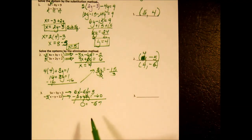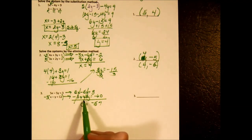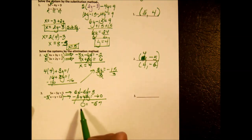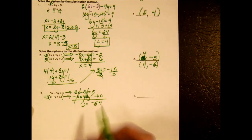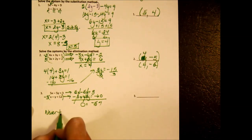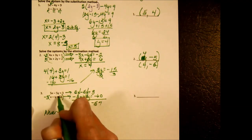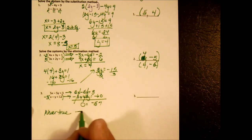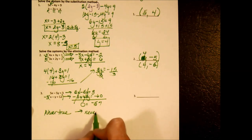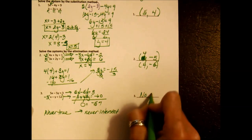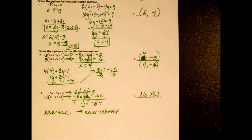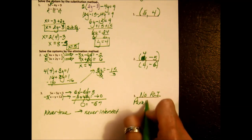When both the x's and y's become 0, ask yourself if the resulting statement is true. Is 0 equals negative 57 ever true? That is never true, so our two lines never intersect — meaning there is no point of intersection. The lines are parallel lines.